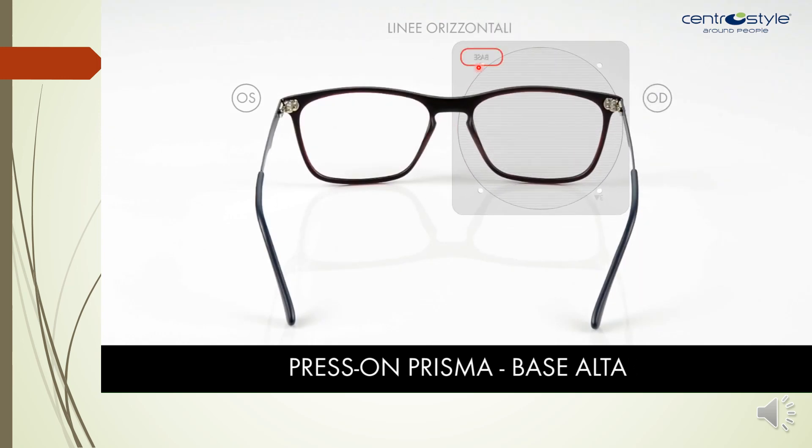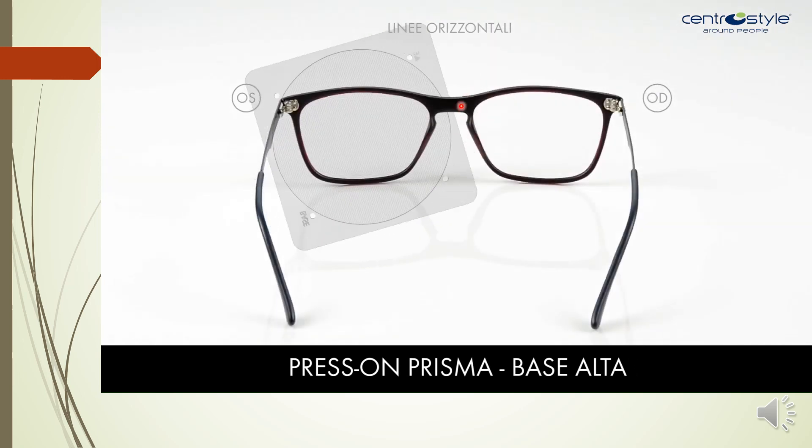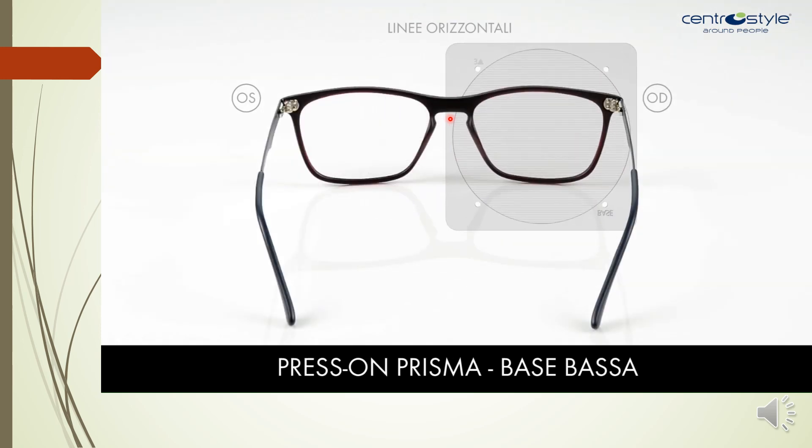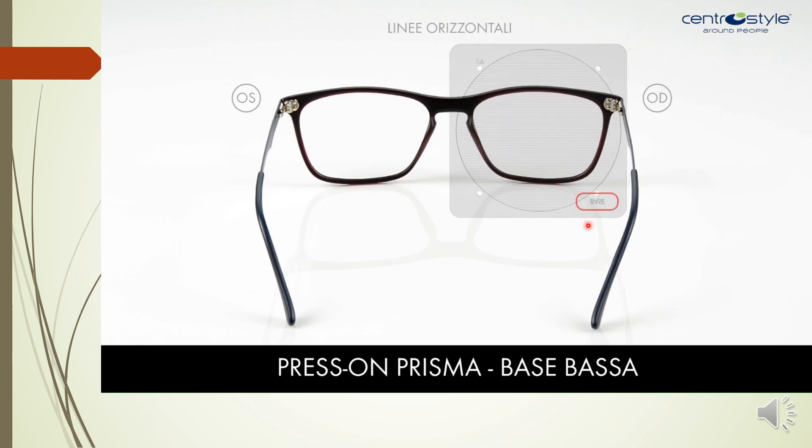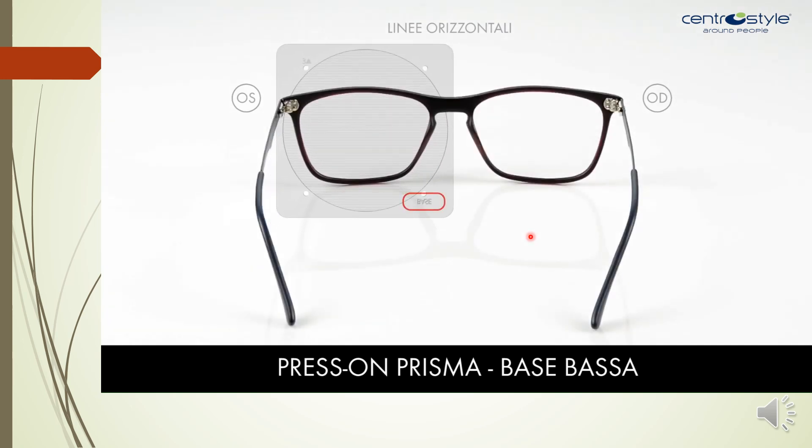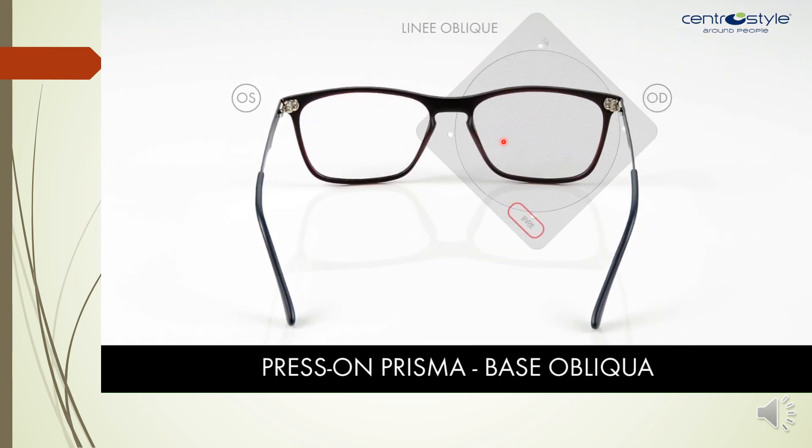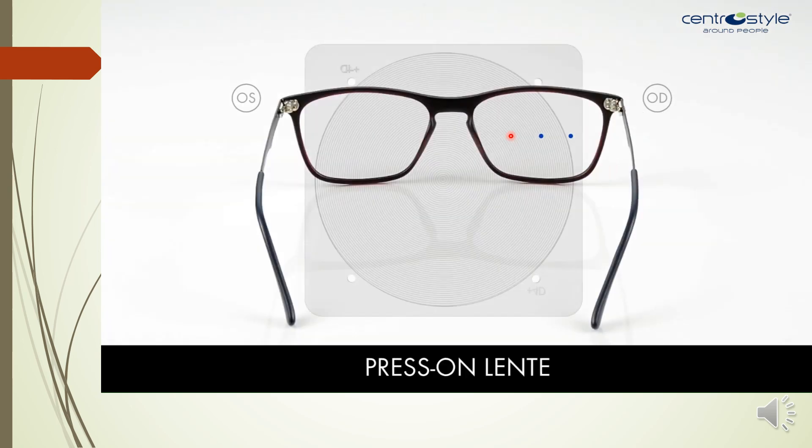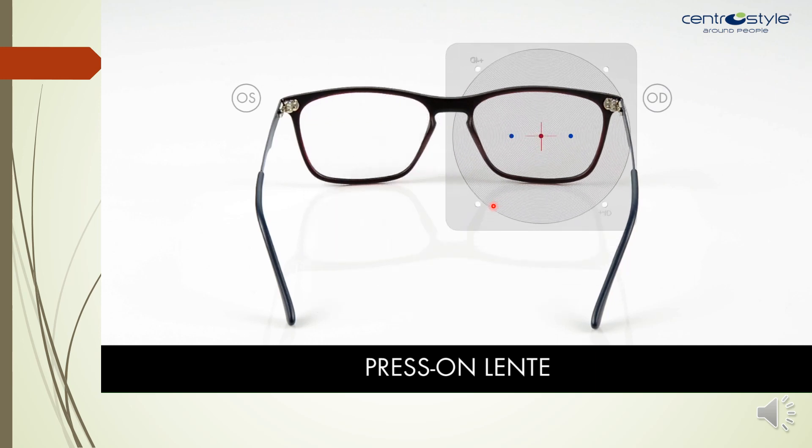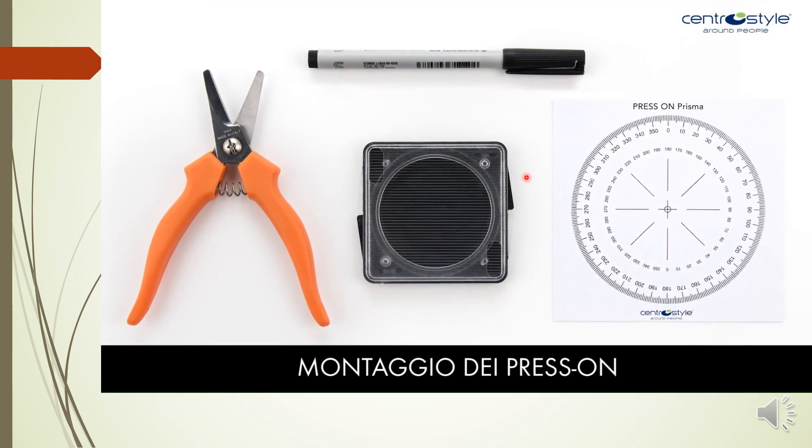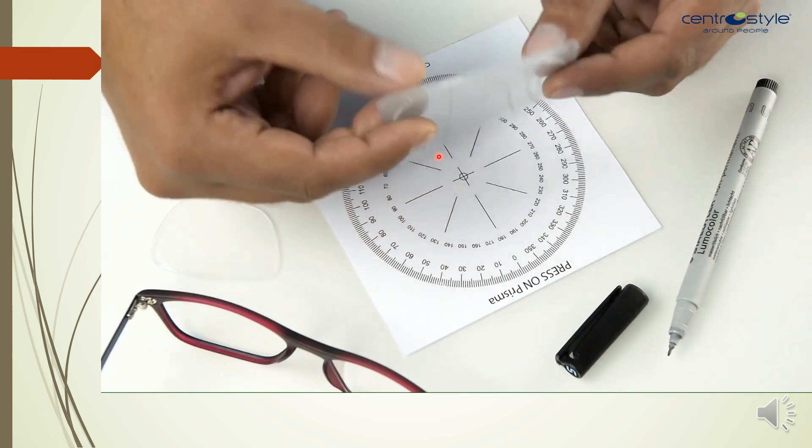When I place this up, that is called base up orientation. And when you take it down, this would be your base down orientation. If you see here, one side is your base return and the other side is your power. You can place it obliquely. Now the best part about this prism is you can put it on any axis. Depending on what axis the prism has to be prescribed, it can be easily done. This is for Fresnel lenses. For that, you need to mark the center.